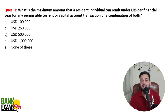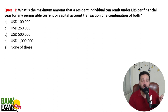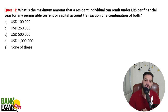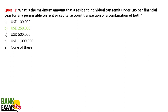What is the maximum amount that a resident individual can remit under the Liberalized Remittance Scheme (LRS) per financial year for any permissible current or capital account transaction or combination of both? Under the automatic route, the maximum an individual can send is 2 lakh 50 thousand US dollars.